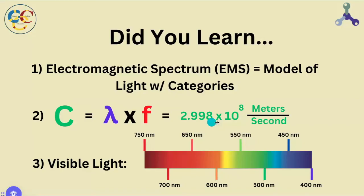Different categories of light have different ranges of wavelength and frequency respectively. And visible light is the one that's smack dab in the middle that we really want to pay attention to and even memorize.